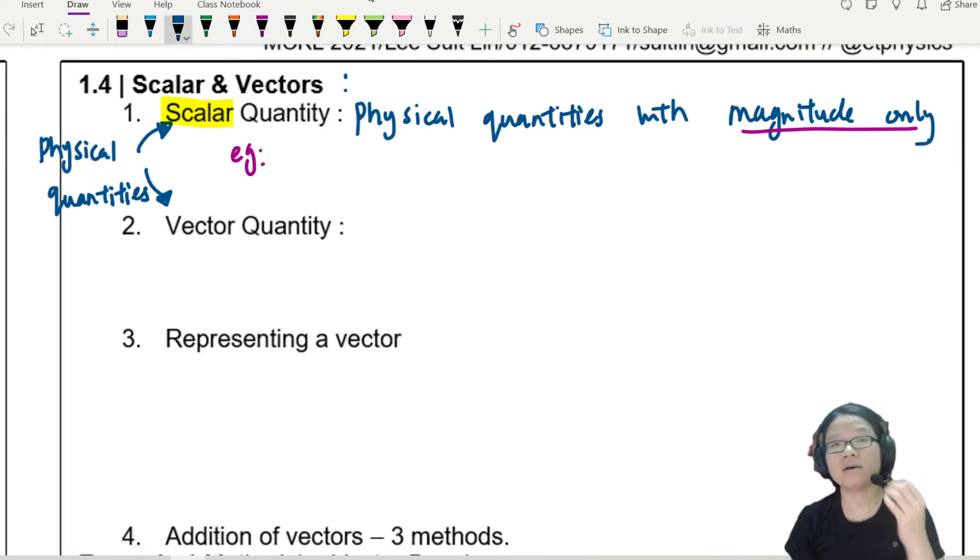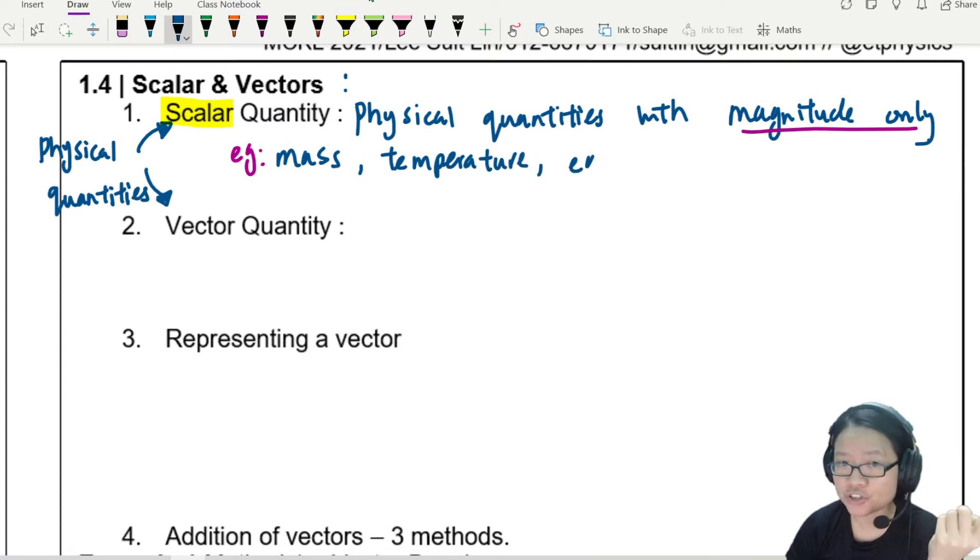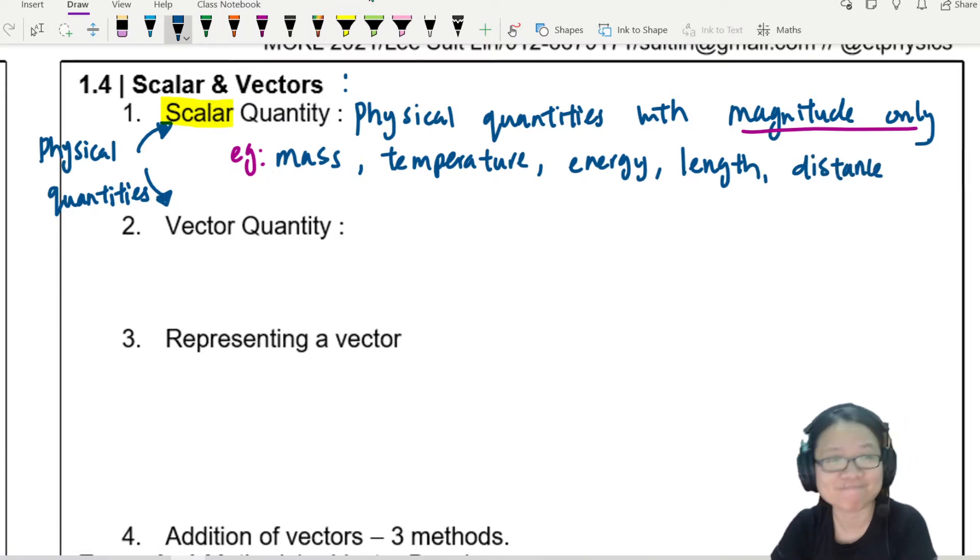For examples, we are talking about mass, temperature, energy is a scalar like kinetic energy or potential energy. And also, something else that are scalar that is a little bit hard to fathom is length or distance. More about this in your next chapter. But this is scalar quantity. For scalar, we only think about magnitude.